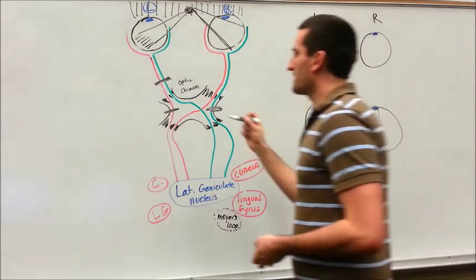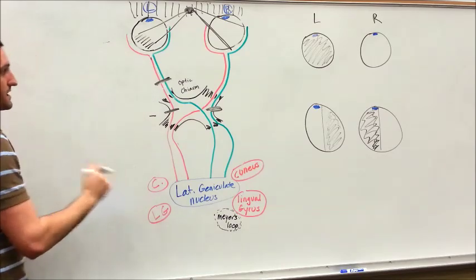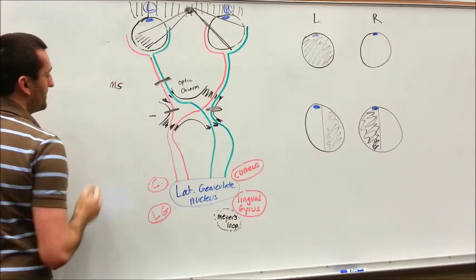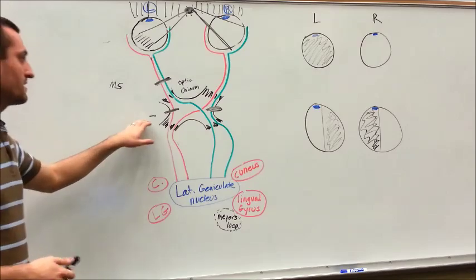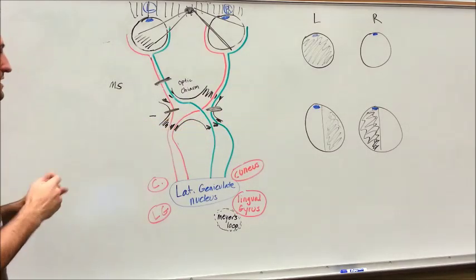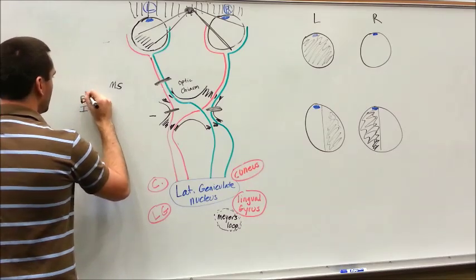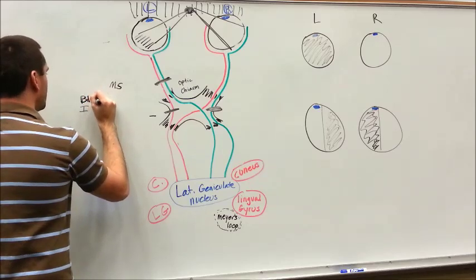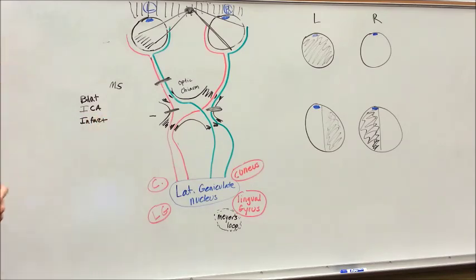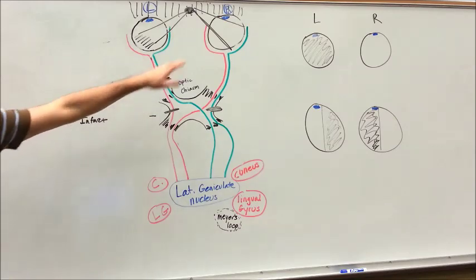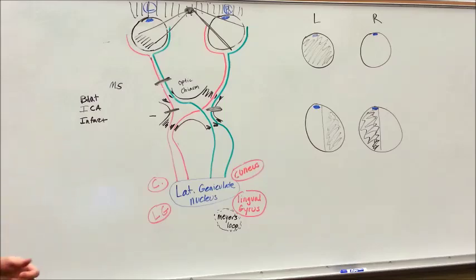Within our optic chiasm and the left eye, we made the lesions somewhere between these two locations. What can actually cause that? That's going to be MS — multiple sclerosis is going to be the most likely cause of this lesion. What can cause these lateral lesions? That would be a bilateral ICA infarct — a bilateral internal carotid artery infarct. So MS causes the first example, and bilateral ICA infarct causes the second example. We'll go on to more pathologies.